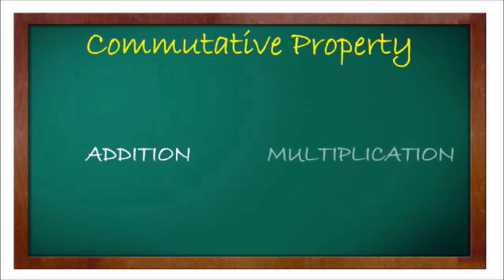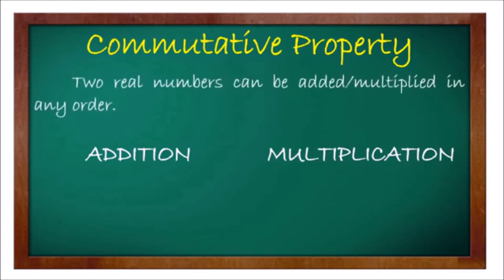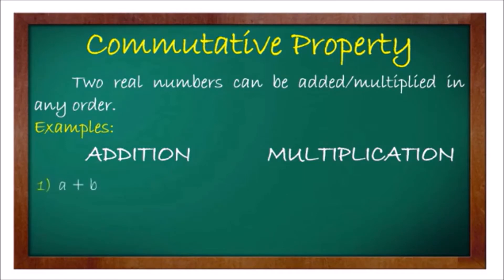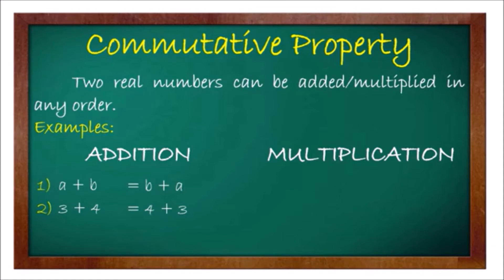The next property is the commutative property of addition and commutative property of multiplication. This property states that two real numbers can be added or multiplied in any order — meaning even if you switch the order of the numbers, the answer remains the same. For addition: a plus b equals b plus a. For example, 3 plus 4 equals 4 plus 3, both equal 7. Also, 5 plus negative 2 equals negative 2 plus 5, both equal positive 3.